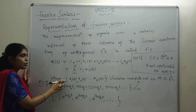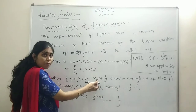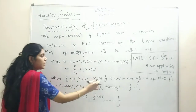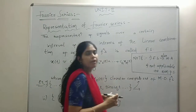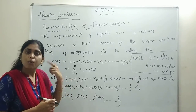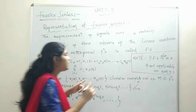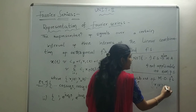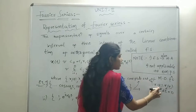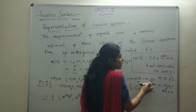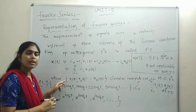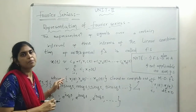Here the assumption is that the set {x1(t), x2(t), ..., xN(t)} is a closed or complete set of orthogonal functions. For this to be a closed or complete set, the orthogonal condition has to be satisfied. Two signals are said to be orthogonal if their product integrated over a time interval t1 to t2 is equal to zero. Here each and every function is orthogonal to every other function in the set — that is what we mean by a mutually orthogonal set.